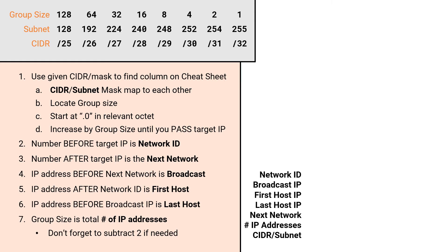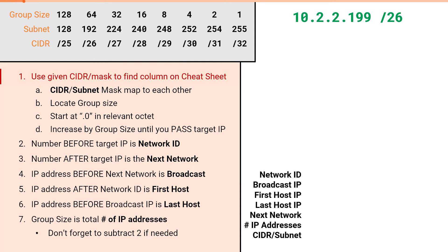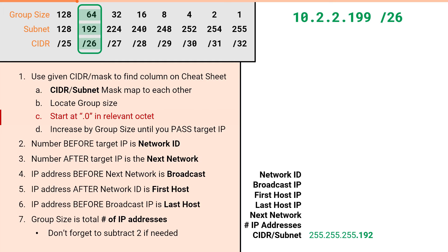We've reached the final problem of this video. We will solve all seven attributes for 10.2.2.199 slash 26. A slash 26 maps to the mask 255.255.255.192, and the group size is 64. We will then start incrementing from .0 until we pass the target IP: .0, .64, .128, .192, .256.